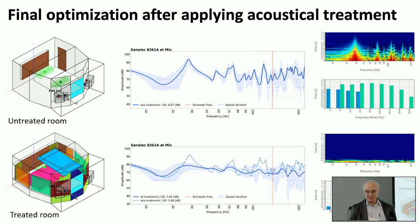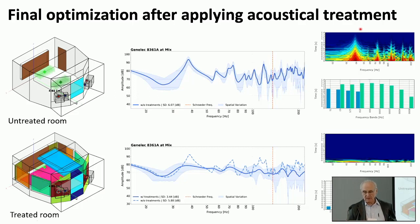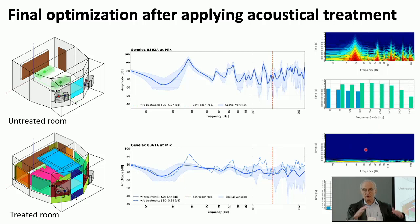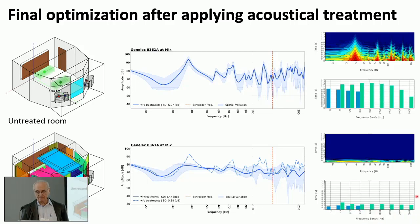We also have a time response — this is how the sound decays in the room with respect to time. Here you see an untreated room with these problematic frequencies which ring and corrupt the sound, and a reverberation time which is non-ideal. The goal is to have a very uniform temporal decay so all frequencies decay at the same time, and a very uniform reverberation time.